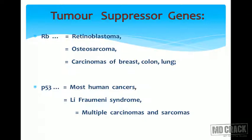Gene defects, either inherited or sometimes sporadic, in the retinoblastoma gene can result in the formation of retinoblastomas. Knudson's hypothesis was based on retinoblastoma gene study — he hypothesized that both alleles of the retinoblastoma gene must be mutated to form a retinoblastoma in children. Those with retinoblastoma also have a very high chance of developing osteosarcomas, as well as breast, colon, and lung carcinomas.